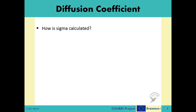Next, we have to define sigma. Following a simple Brownian motion, sigma is calculated by taking the square root of 2 times the diffusion coefficient D times delta t. As described above, delta t is a system variable which we can choose based on our desired granularity. On the other hand, the diffusion coefficient D is a system parameter.